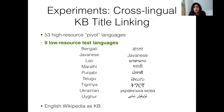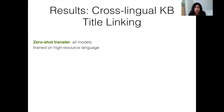For our first set of experiments, we trained models on 53 high-resource languages that can potentially be used for transfer. As test data, we use nine low-resource languages: Bengali, Javanese, Lao, Marathi, Punjabi, Telugu, Tigrinya, Ukrainian, and Uighur. As you can see, all these languages use different scripts and come from several language families from all over the world. The test set contains article titles in the low-resource language from Wikipedia, and the objective is to accurately identify the corresponding English article title among the millions that exist in English Wikipedia. All models are trained on the high-resource languages and the data from the low-resource language is only used as the test set. For the first few experiments, we look at the top-scoring candidate to compute the entity linking accuracy — that is, whether the top-scoring candidate is the correct entity link for the input mention.